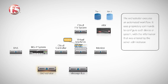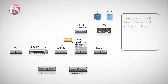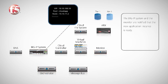The orchestrator uses proprietary API or CLI commands to configure each device or system involved, with the information that was originally entered by the server administrator. Once the virtual machine is up and running, the virtual machine sends an event notification to the message bus. This notification alerts the orchestrator that the new virtual machine is available. The orchestrator then notifies the BIG-IP system in the monitor that the new application instance is running and ready to receive connections.